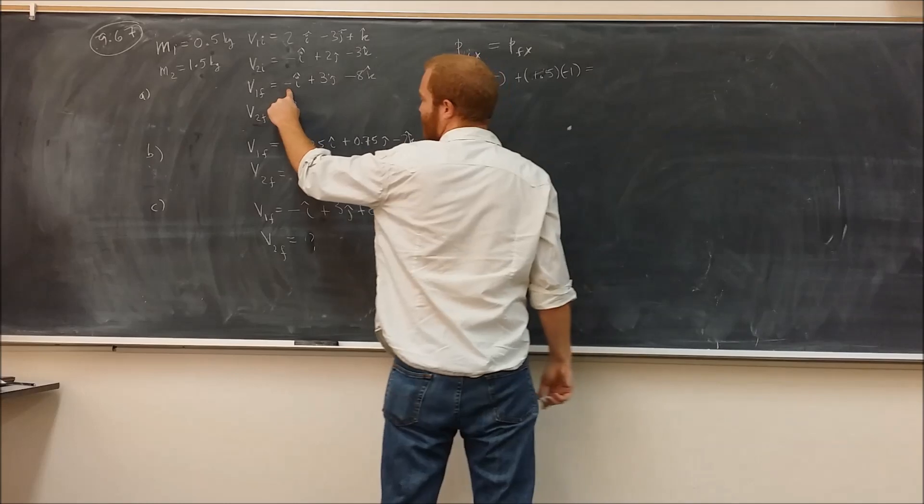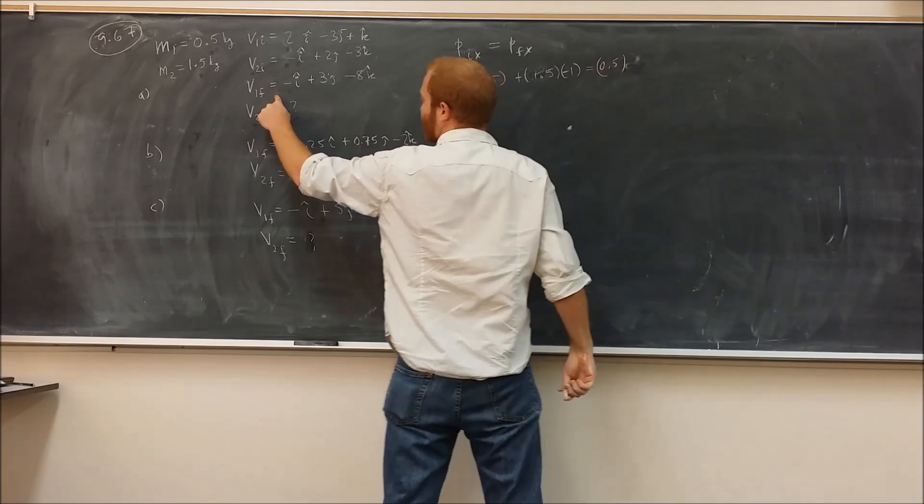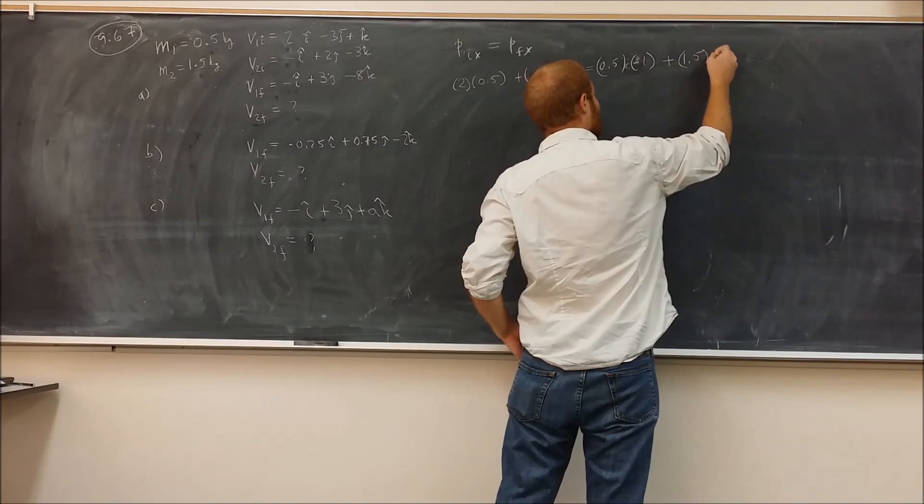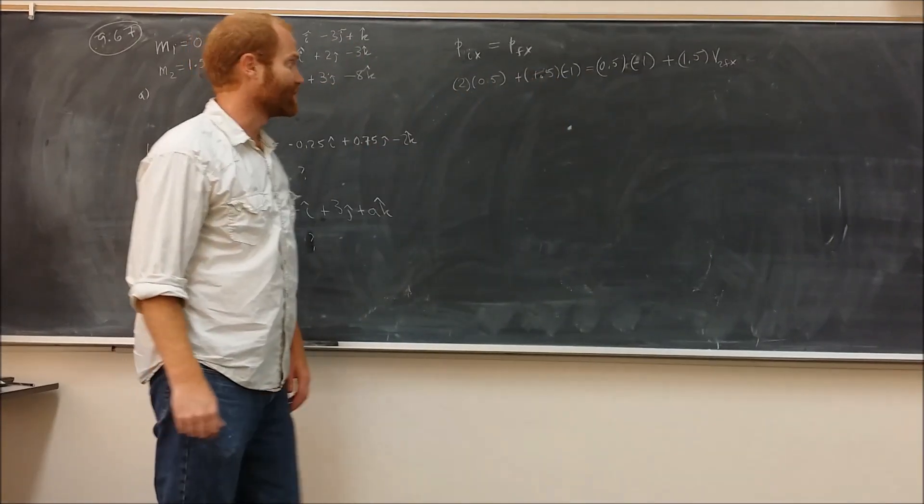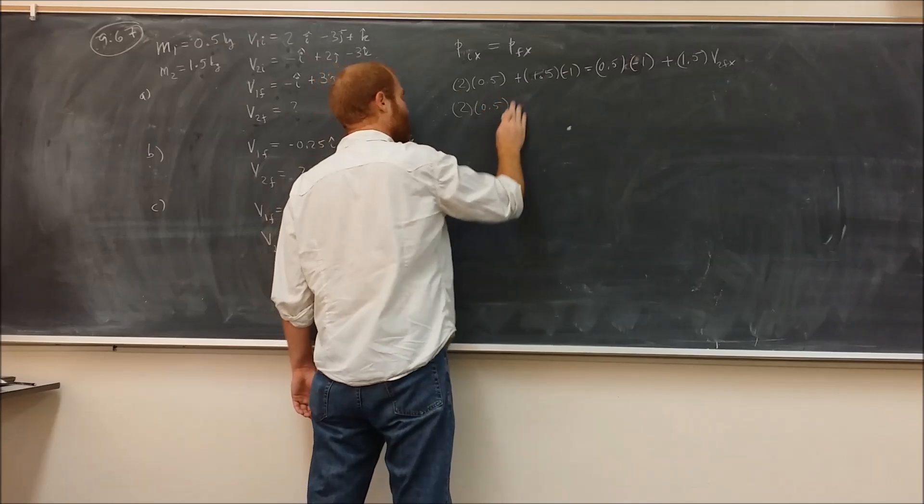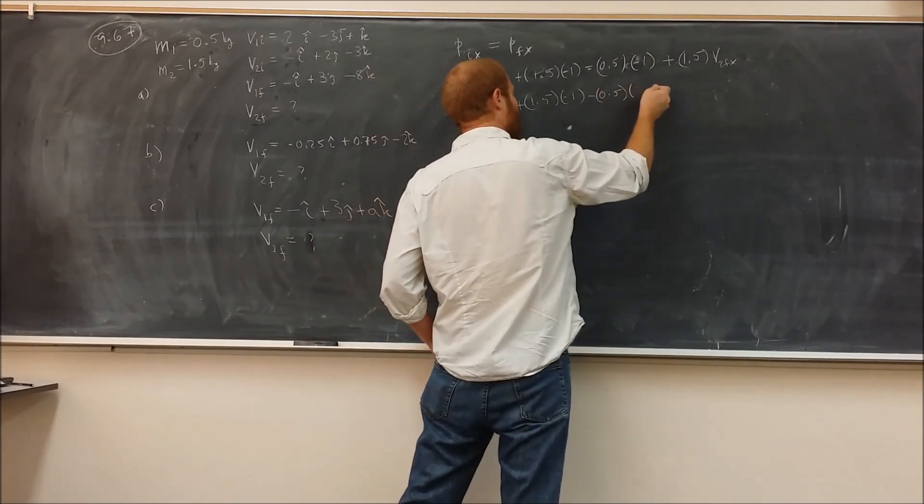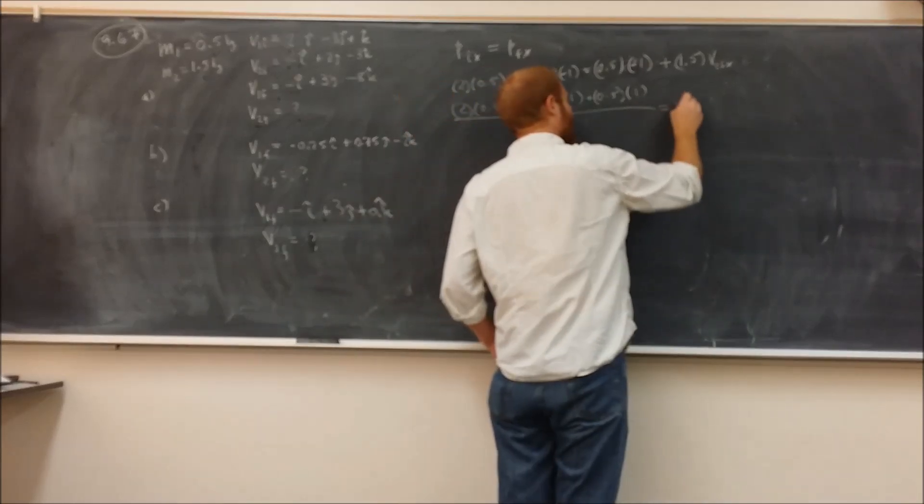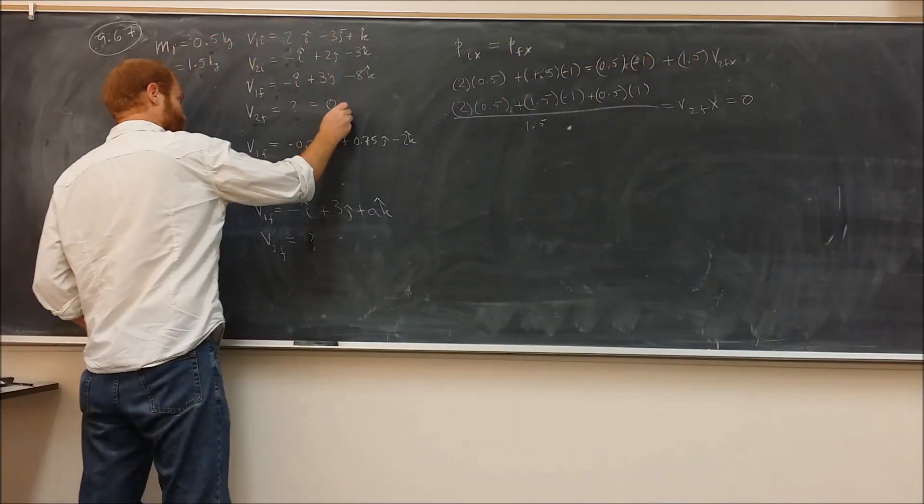And that's going to be equal to the final momentum. This object here has a mass of 0.5 times its velocity, which is negative 1, plus 1.5 times what we're looking for, which is V2Fx. Now in order to solve this, all we really need to do is to just add this term over here. So 2. Now if you actually calculate all of this, you're going to get 0. So our V2F here is going to be 0 i hat.